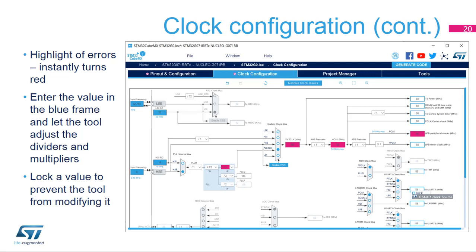It also works the other way: enter the required clock speed in a blue frame, and the software will attempt to reconfigure multipliers and dividers to provide the requested value. Right-click on a clock value in blue to lock it and prevent modifications.